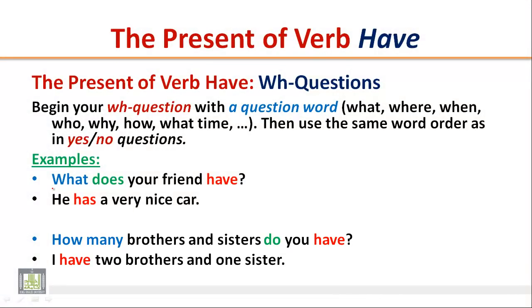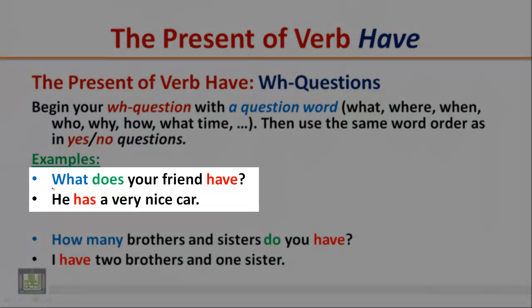How many brothers and sisters do you have? I have two brothers and one sister. Pay attention to the word order in WH questions: we begin with a question word, followed by the auxiliary verb, followed by the subject, followed by the base form or main verb.